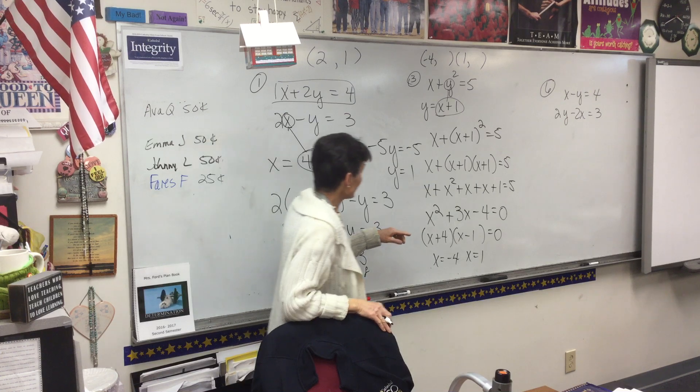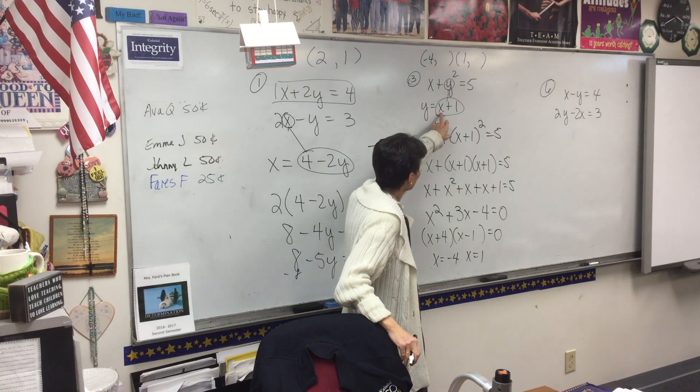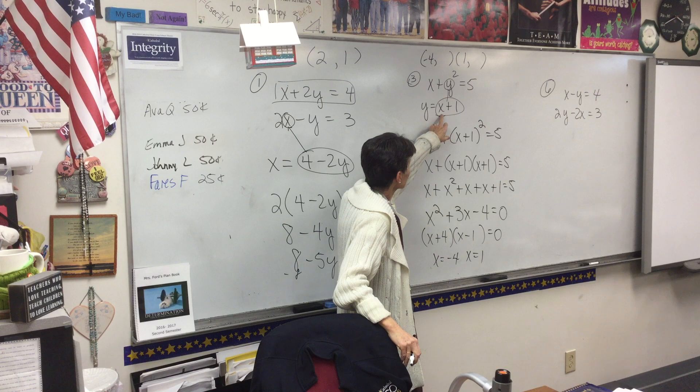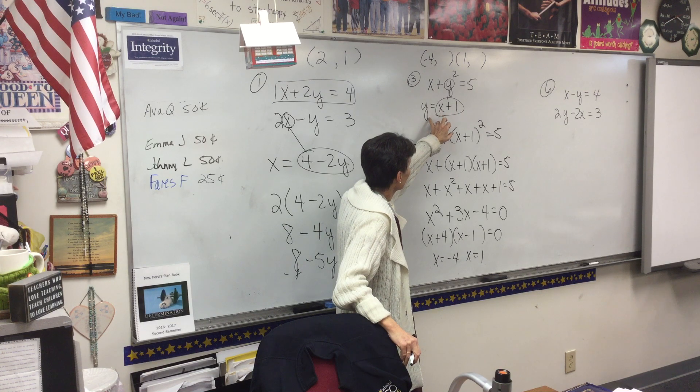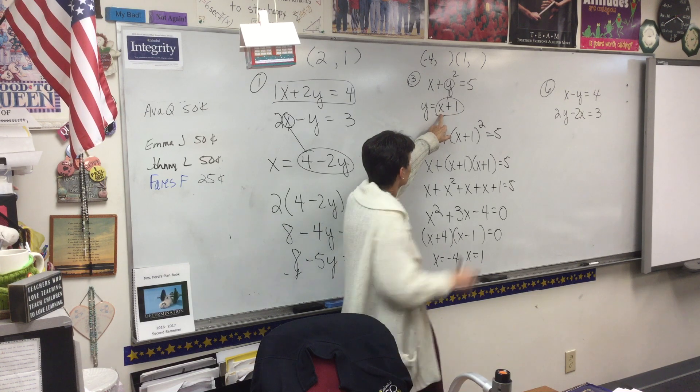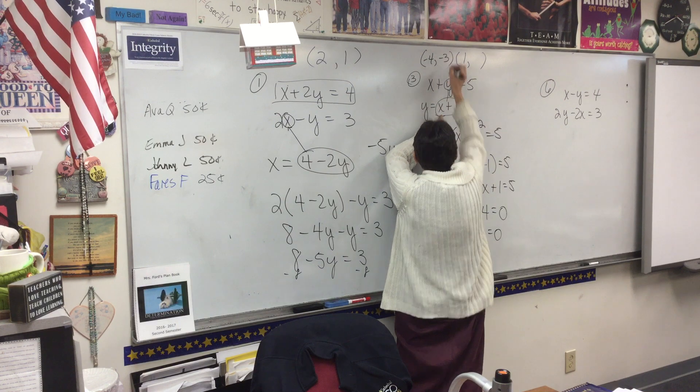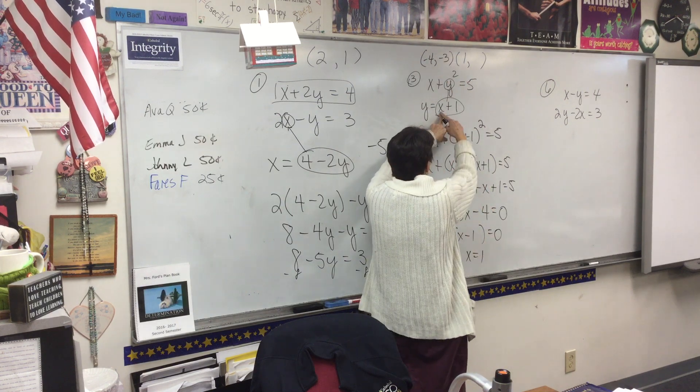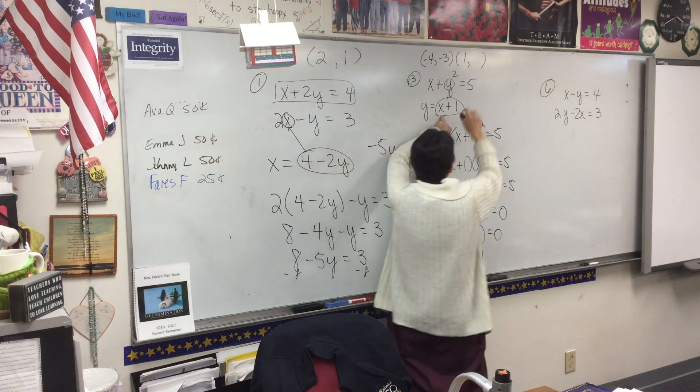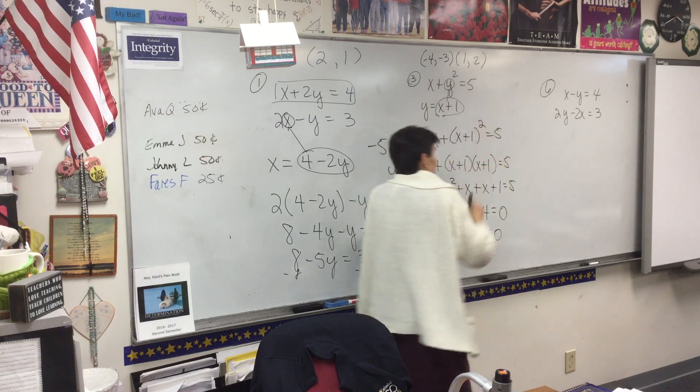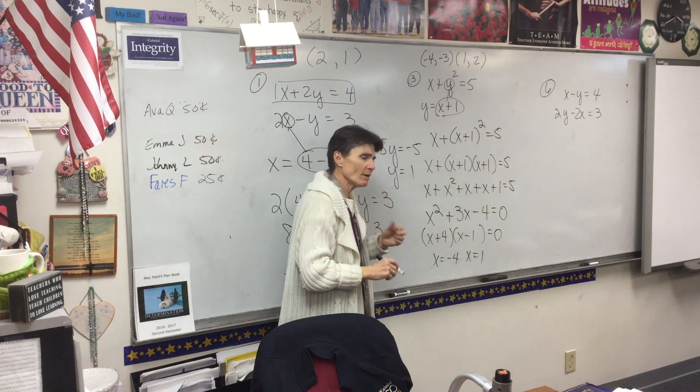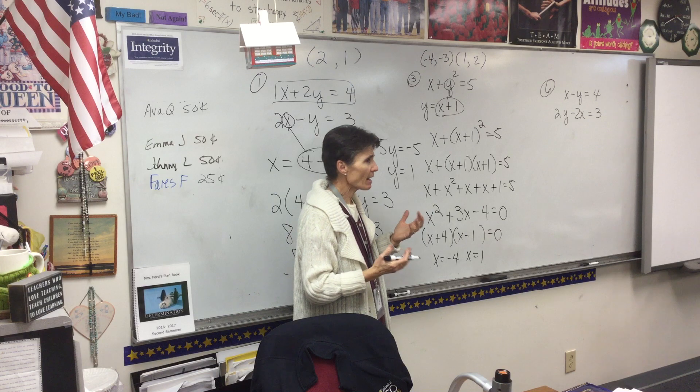I'm not done. I'm going to take that negative 4, and I'm going to put it right here. If x is negative 4, then y would be negative 3. And then if x is 1, y would be 2. Now, wait a minute. Why are there two answers to this? Does that make sense?